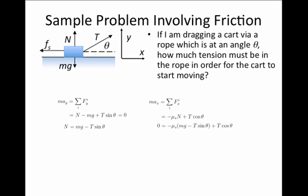In the X direction, the object is not accelerating because we're trying to make it just start to move, meaning constant speed. We set acceleration in the X direction equal to zero, and inserting the normal force mg minus T sine theta, we have an expression with μ_s, T, m, g, and the angle theta.